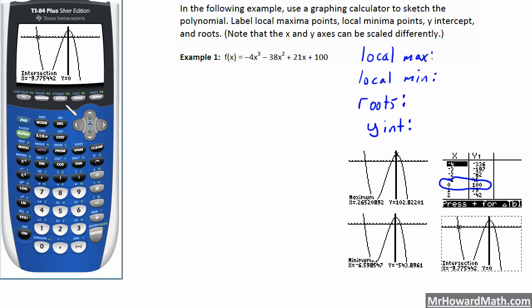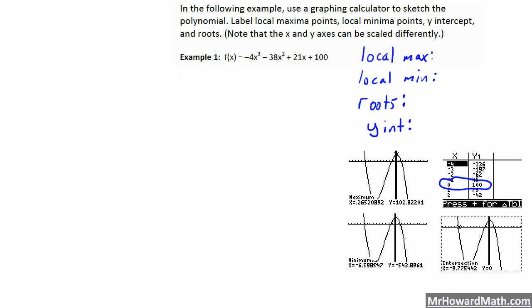And let's, this time, just so I can show you, let's use the 0 option under second trace. That's option 2, zero. So left bound for this 0, we just want to get left of it. We're going to find this middle 0 now. So anywhere left of it's fine. Enter. Right bound. I can type in a number, just arrow past it to the right. That works. And then enter again. And there is the second root.